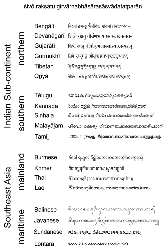Abugidas were long considered to be syllabaries, or intermediate between syllabaries and alphabets, and the term syllabics is retained in the name of Canadian Aboriginal syllabics. Other terms that have been used include neo-syllabary, pseudo-alphabet, semi-syllabary, and syllabic alphabet, though this last term is also a synonym for syllabary.